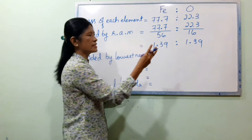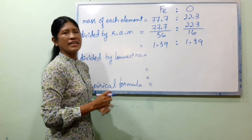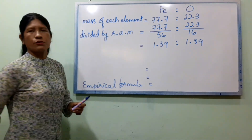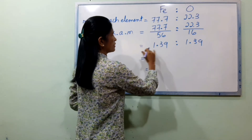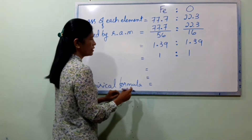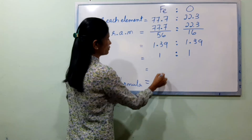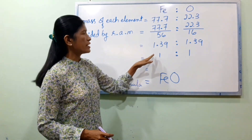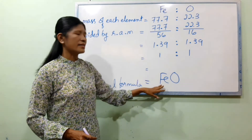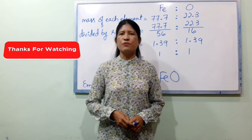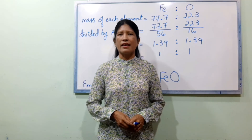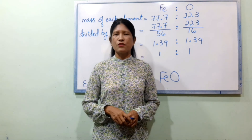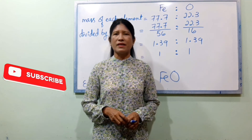Both iron and oxygen give a ratio of 1.39 divided by 1.39, which equals 1 for each. So the empirical formula of the iron oxide is FeO. See you next lesson. Bye.